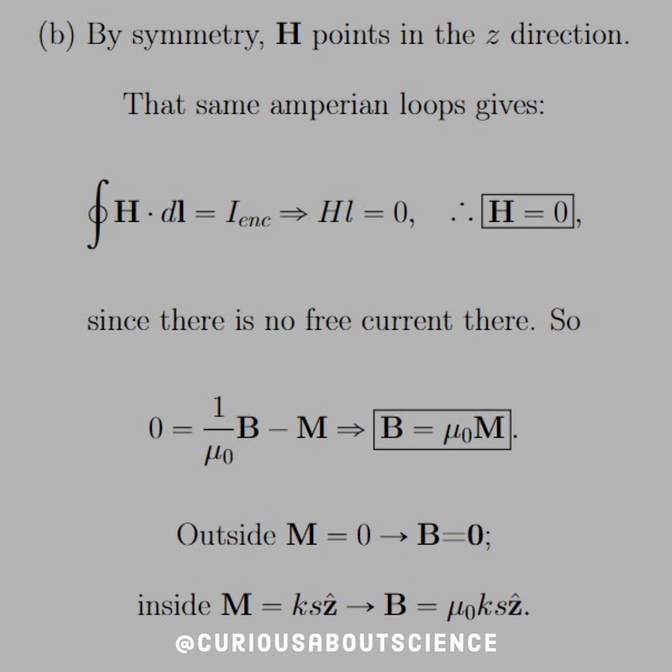So outside, M equals 0, B equals 0. Inside, M equals KS Z hat, and therefore B inside is equal to mu knot KS Z hat. Good to go there. Pretty nice to see consistency once again.